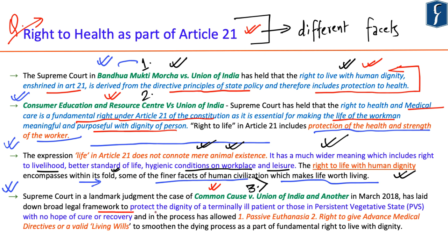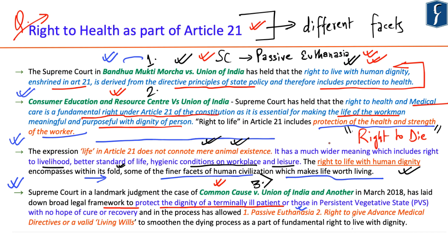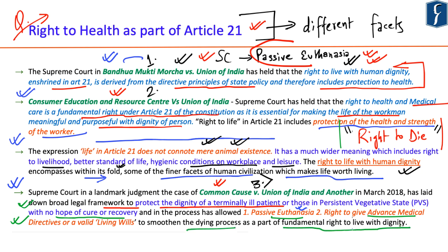In Common Cause vs Union of India (March 2018), the Supreme Court laid down a broad legal framework to protect the dignity of a terminally ill patient or those in a persistent vegetative state. The court allowed passive euthanasia — but not active euthanasia — and recognized the right to give advance directives or a valid living will to smoothen the dying process as part of the fundamental right to live with dignity. These are important facets of right to health under Article 21.